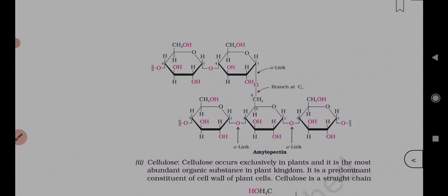Maltose shows reducing properties because the free aldehydic group can be produced at C1 of the second glucose unit. Lactose is also a reducing sugar composed of beta-D-galactose and beta-D-glucose, with C1 of galactose and C4 of glucose involved in linkage. Since C1 of glucose is free, it can show reducing properties.